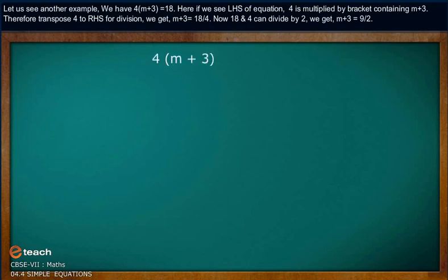Let us see another example. We have 4(m + 3) equals 18. Here, if we see the left-hand side of the equation, 4 is multiplied by the bracket containing m plus 3. Therefore, transpose 4 to the right-hand side for division. We get m plus 3 equals 18 divided by 4.